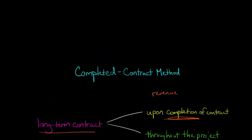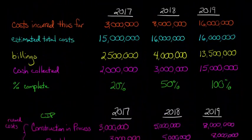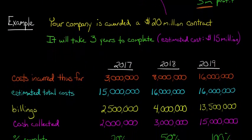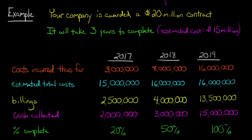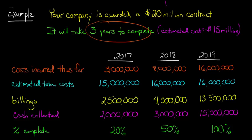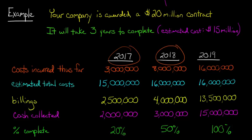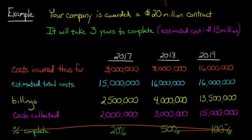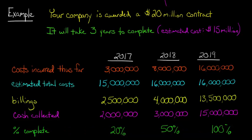It's useful to review the example we used with the percentage of completion, because there are a lot of similarities. We said your company is awarded a $20 million contract, and it's going to take three years to complete at an estimated cost of $15 million. Under percentage of completion, we calculated percentages to recognize revenue in 2017, 2018, and 2019. Under completed contract, we don't have to worry about those percentage completion calculations — we're just going to wait and not book anything until the end, so we don't have to make any estimates as we go throughout the project.